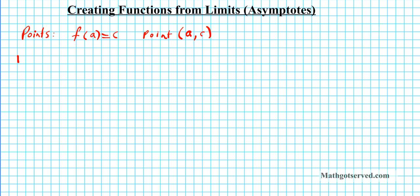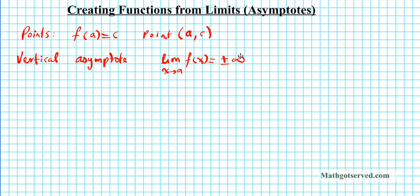For vertical asymptotes, you just have to remember the definition. If you have the limit as x approaches a — it could be from the left or right — if that limit equals plus or minus infinity, then you have a vertical asymptote at x equals a.